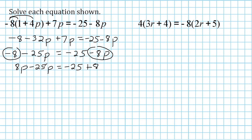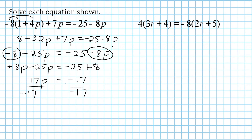On the left we can combine positive 8p and negative 25p, which gives negative 17p. On the right, negative 25 plus 8 is negative 17. We divide both sides by negative 17. On the left, negative 17p divided by negative 17 is positive 1p. On the right, negative 17 divided by negative 17 is positive 1. So p is equal to positive 1.